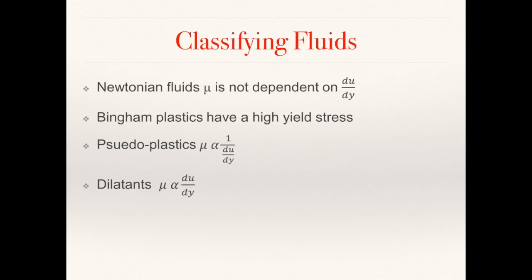We can classify fluids into two different categories based on the relationship between viscosity and shear rate. A Newtonian fluid is one where the viscosity is not dependent on the shear rate, and a non-Newtonian fluid is one where viscosity is dependent on the shear rate. We can further divide non-Newtonian fluids into three categories. Bingham plastics have a high yield stress, meaning they continue to act as solids until a high enough shear stress is reached, at which point they begin to exhibit fluid properties. A common example of this would be mayonnaise.